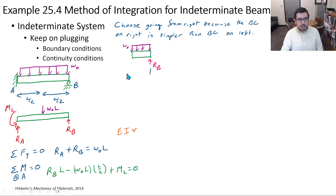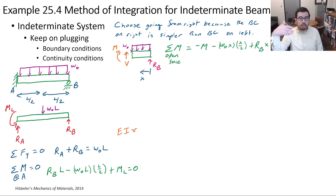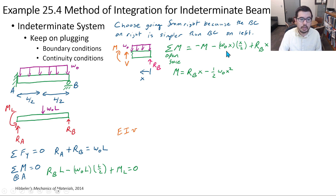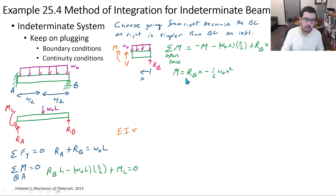We're going to take a slice and use the method of integration. We'll solve for the internal moment directly, skipping internal shear, because if we sum moments at the open face, V contributes no moment. Rearranging gives an expression for the internal moment that contains Rb — which is unknown. That's a bit disturbing, but Rb is a constant, so we can still integrate without too much difficulty. We then need to apply boundary conditions to figure out what Rb is.